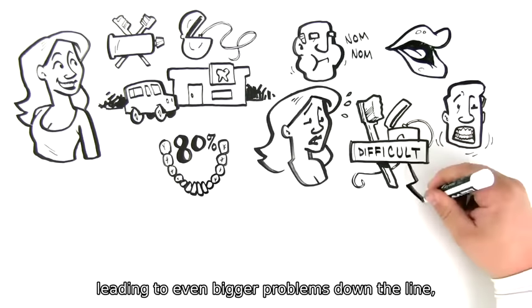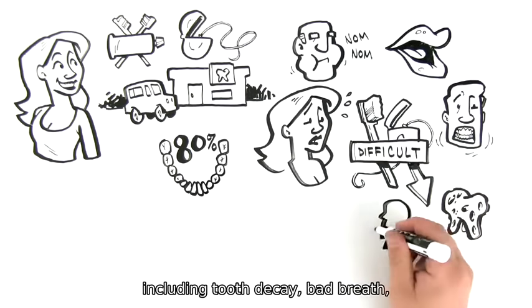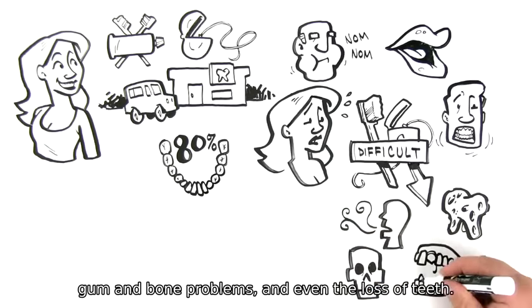All this crowding can ruin Vanessa's perfect smile and make brushing and flossing more difficult, leading to even bigger problems down the line, including tooth decay, bad breath, gum and bone problems, and even the loss of teeth.